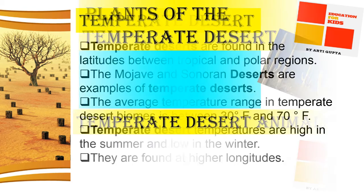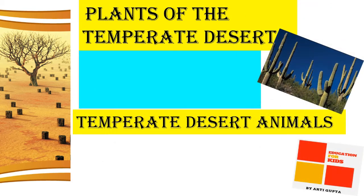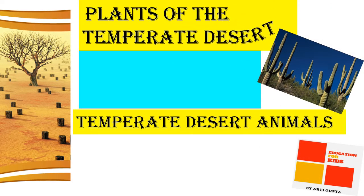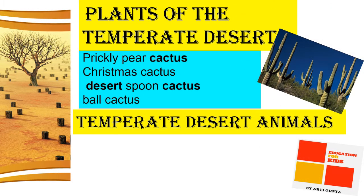Plants of temperate deserts include prickly pear cactus, Christmas cactus, desert spoon cactus, and ball cactus.